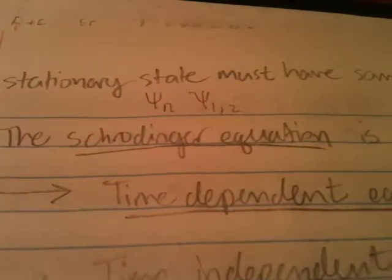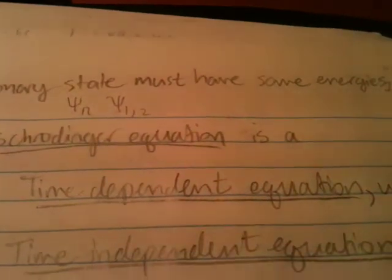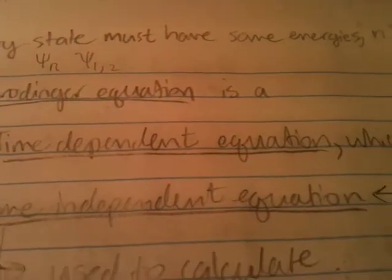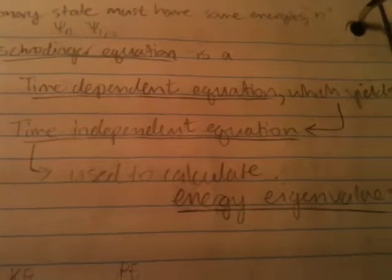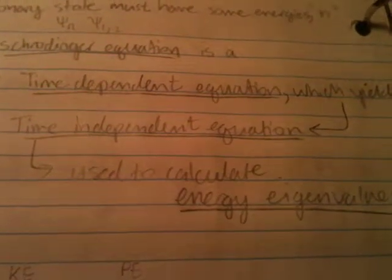As in definition, the Schrödinger equation is just a time-dependent equation which yields a time-independent equation. And this TISE is used to calculate energy eigenvalues.